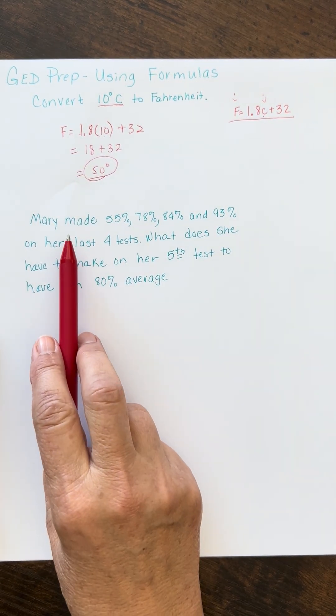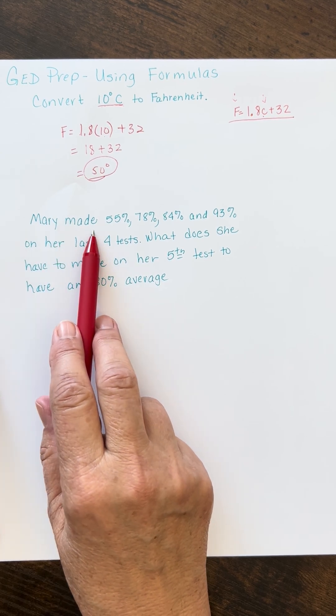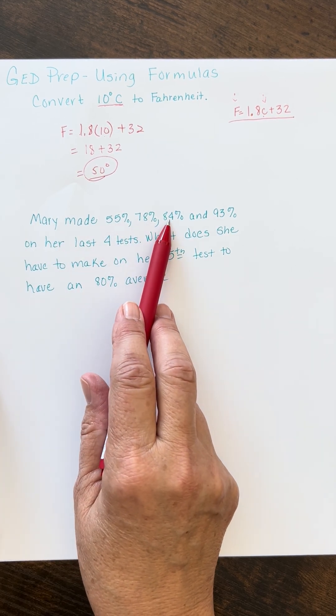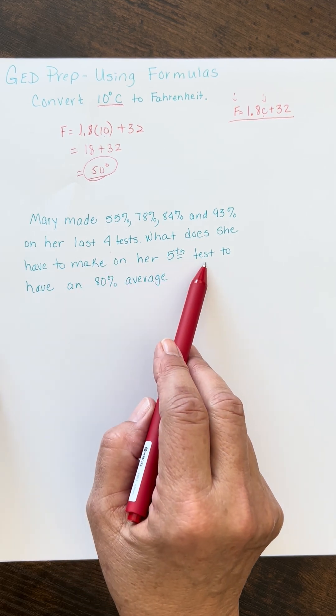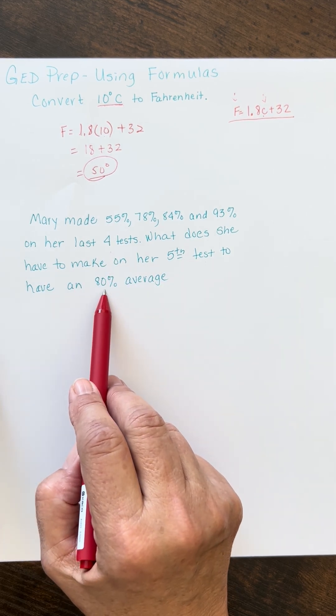Okay, in this next sample, and this is a very common problem, Mary made 55, 78, 84, and 93 on her last four tests. So, what does she need to make on her fifth test to have an average of 80 percent?